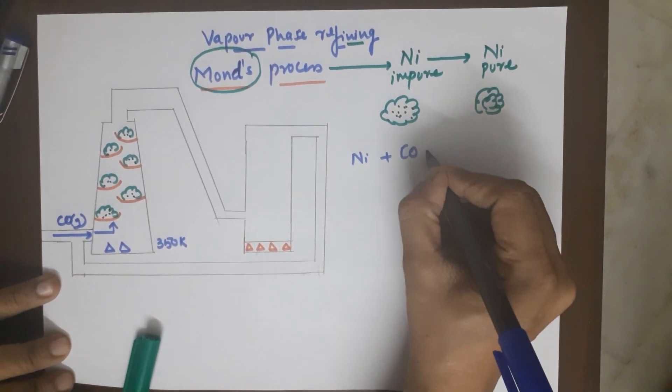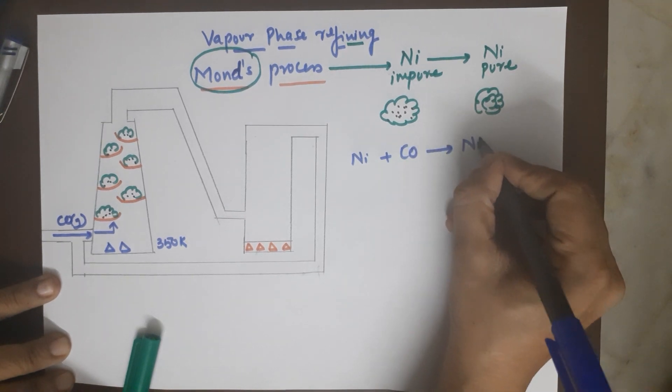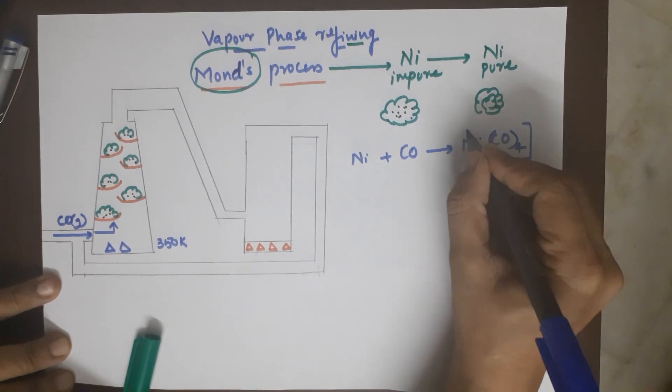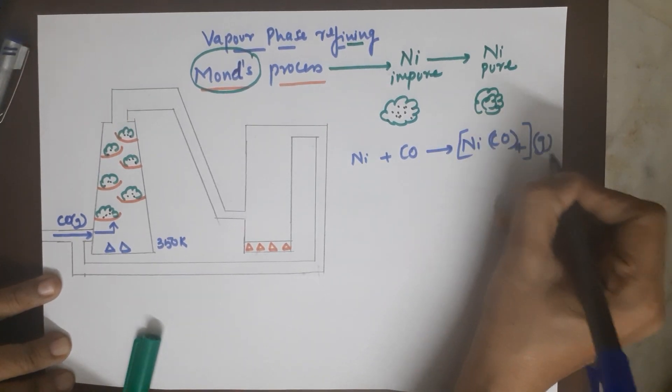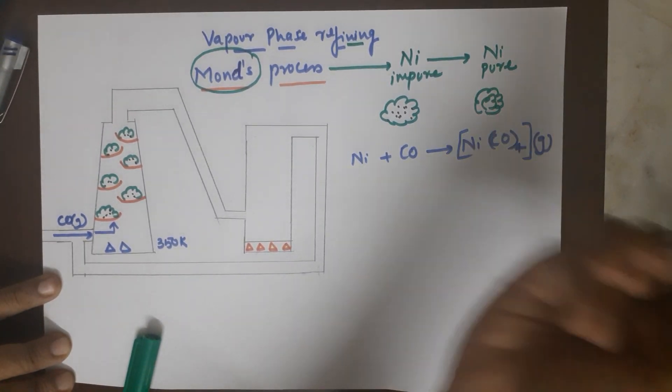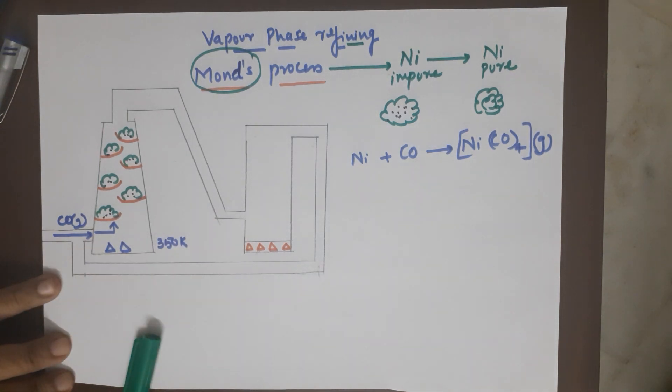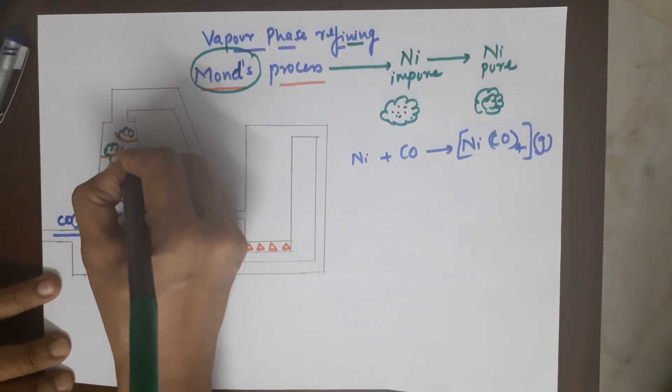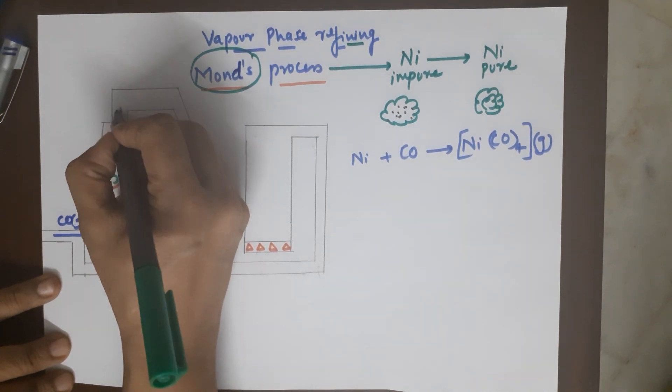Nickel tetracarbonyl which is a volatile compound, which means when you react with this, you would find that the nickel starts to form nickel tetracarbonyl and starts moving out of this chamber.